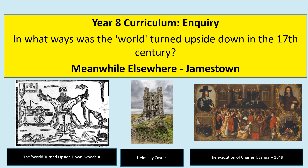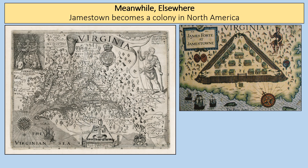Hello there and welcome to this Meanwhile Elsewhere on the topic of Jamestown, which is part of our Year 8 curriculum: In What Ways Was the World Turned Upside Down in the 17th Century? We are going to focus all about Jamestown and how it became a colony in North America and was one of the first British colonies set up there, creating the foundations for what later became the British Empire.